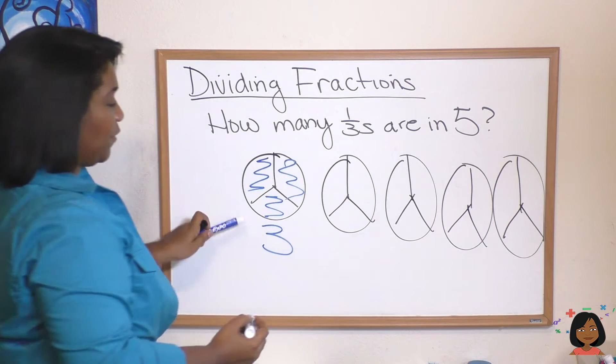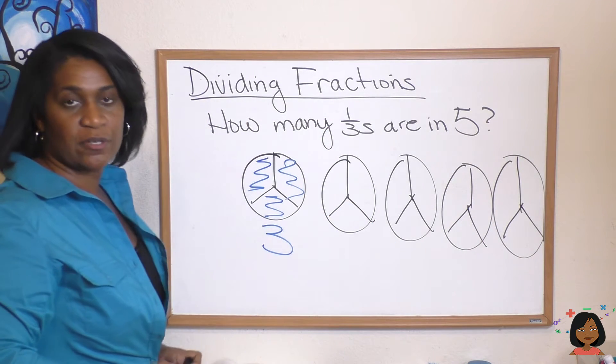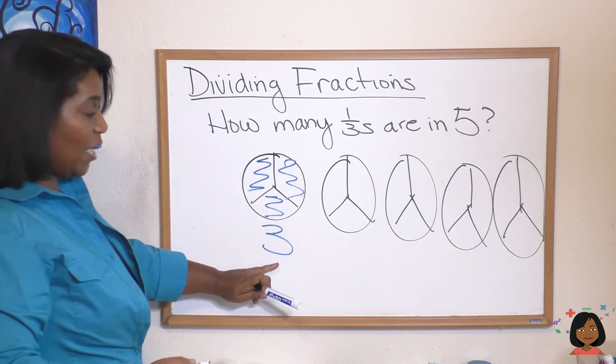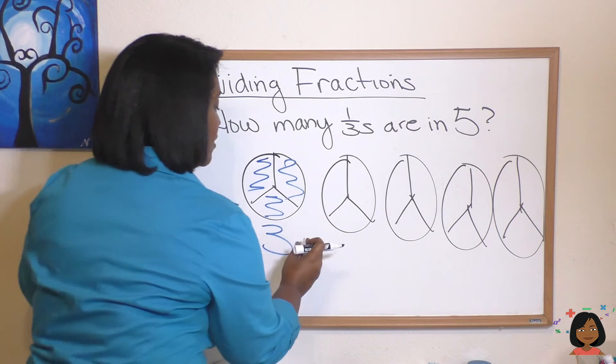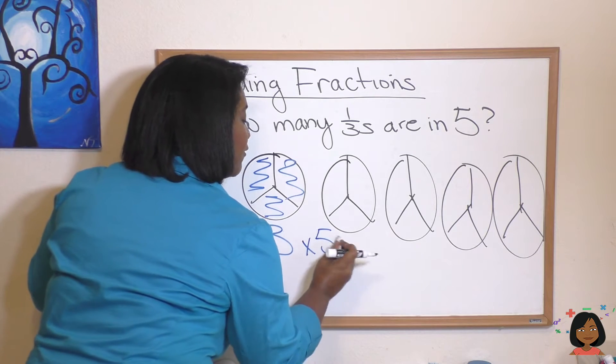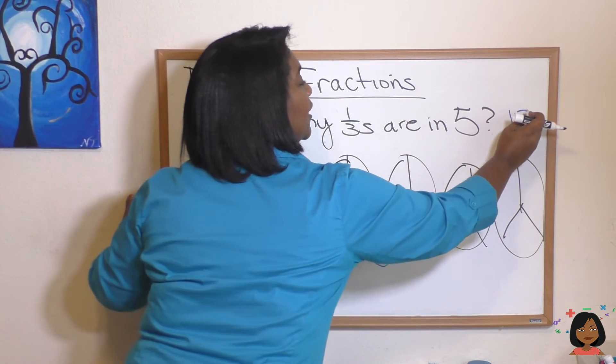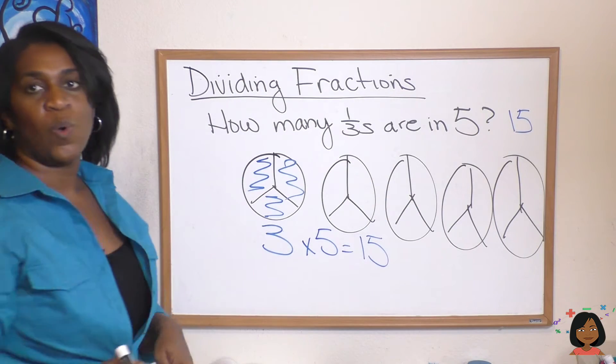Okay if there are three one-thirds in one, how many are in five? We would just say our answer is three times five and we would get 15. So there are 15 one-thirds in five.